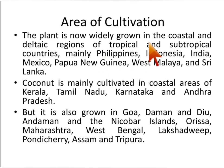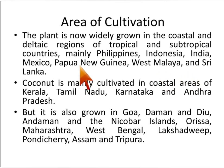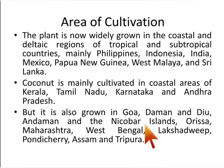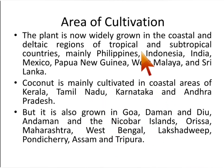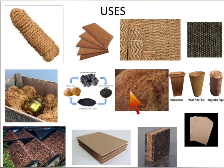This plant is now widely grown in the coastal and delta regions of tropical and subtropical countries, mainly the Philippines, Indonesia, India, Mexico, Papua New Guinea, West Malaysia, and Sri Lanka. In India it is mainly cultivated in coastal areas, but also grown in Goa, Daman, Nicobar Islands, Orissa, Maharashtra, West Bengal, Lakshadweep, Pondicherry, Assam and Tripura.